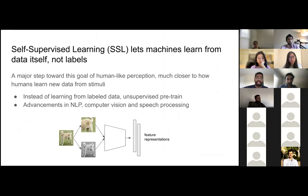For an example in computer vision: if you had a picture of a dog, you could augment it — take a smaller patch, a zoomed-in patch, or apply color jittering to create black-and-white versions — send it through a network and learn representations, which can then be used for later downstream tasks.